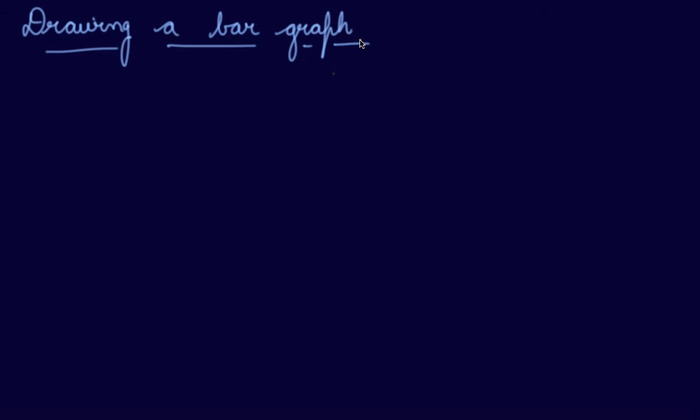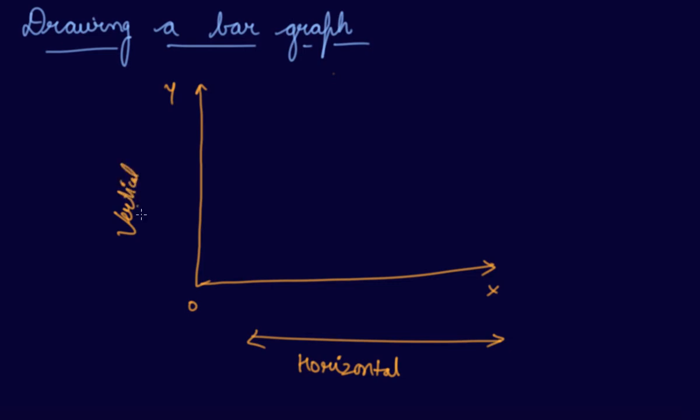Your teachers will provide you the graph paper or you might have a graph copy. First of all, what we need to think is that there are two axes: your x-axis and your y-axis. This is a horizontal axis and this is a vertical axis.